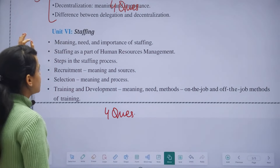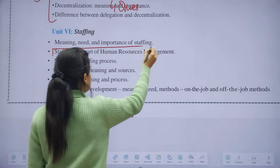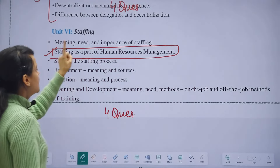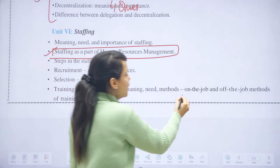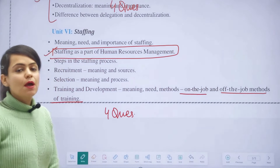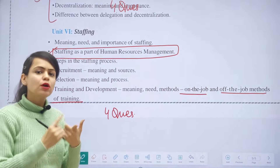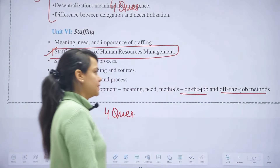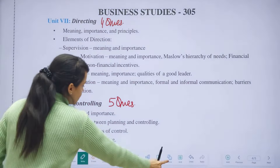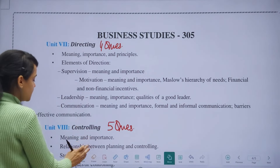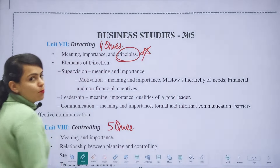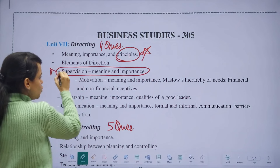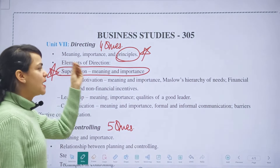In Staffing, the topics are meaning, need, and importance, staffing as a part of human resource management. In the Directing chapter, four questions were asked. It covers meaning, importance, and principles — the principles you do not usually cover for boards, so you will need to cover those. In the elements of directing: supervision is not covered in detail for boards but you will cover it. Motivation topics — meaning, importance, Maslow's needs hierarchy theory — you study anyway.